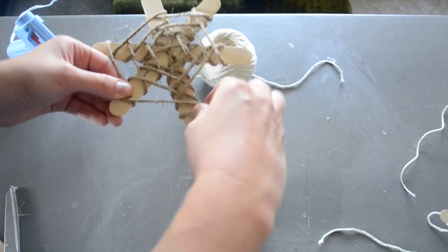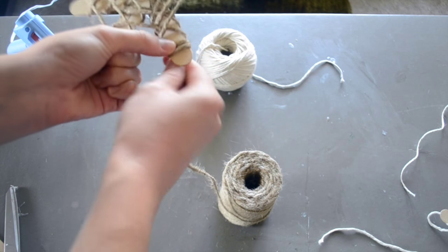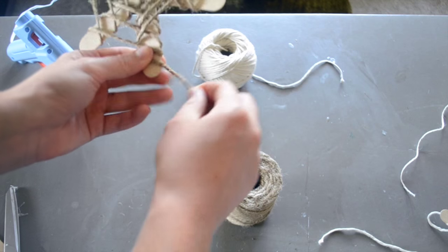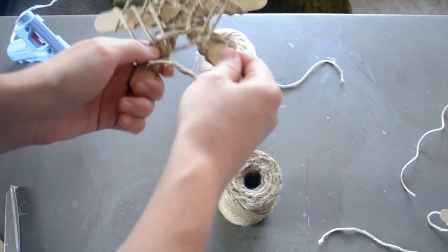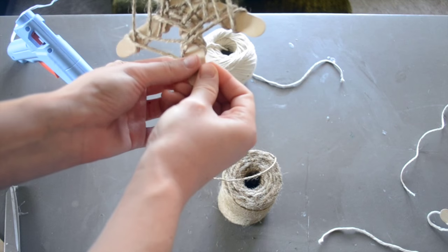This is a super fun and easy project to do with kids. If you're doing it with kids too young to use a hot glue gun, you can go ahead and just prep the popsicle sticks before. That makes it really easy. All they have to do is wrap the string and choose what kind they want to use.